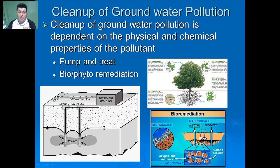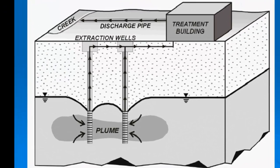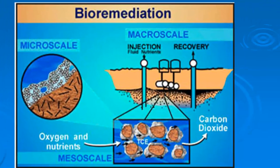Cleanup of groundwater pollution is really dependent on the physical and chemical properties of that pollutant. For some pollutants, we need to drill down and actually pump the pollutant up to the surface so that it can be treated and properly disposed of. In other cases, depending upon the type of chemical we're dealing with, we might actually inject certain bacteria along with nutrients and oxygen down into the pollutant so that the bacteria can bioremediate — consuming the pollutant and converting it into a less harmful substance.